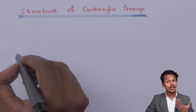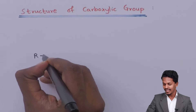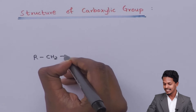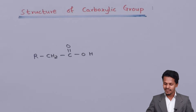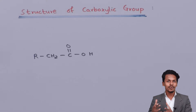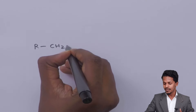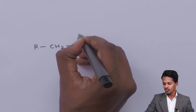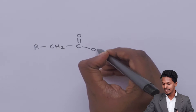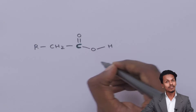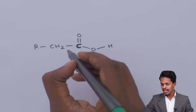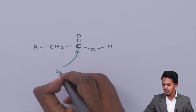We already know that carboxylic acid consists of the carboxyl group, which is C double bond O, O-H. So what is the structure of this carboxyl group? It has been found that the carbon of the carboxyl group (C=O-OH) undergoes sp2 hybridization.